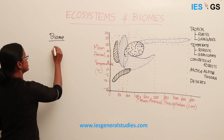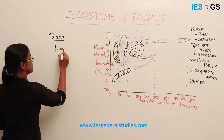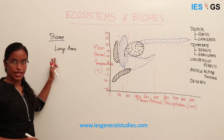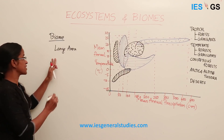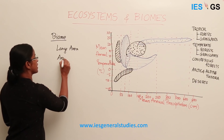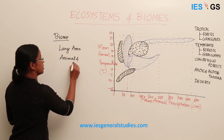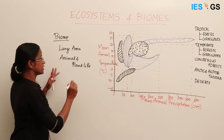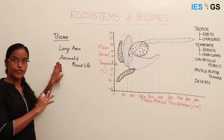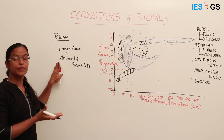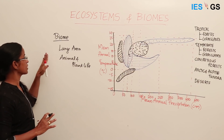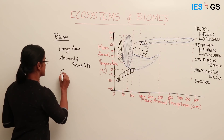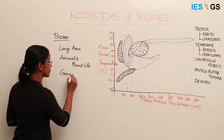A biome is a large geographic area. This large area is characterized by specific animal and plant life. Both animal and plant life differentiate it from other biomes. And this animal and plant life depends on the geographic factors — the geography of the region.